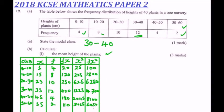Now we do the summations. Totalling the frequency column gives ΣF = 40. Totalling the FX column gives ΣFX = 1100. Totalling the FX² column gives ΣFX² = 37000.